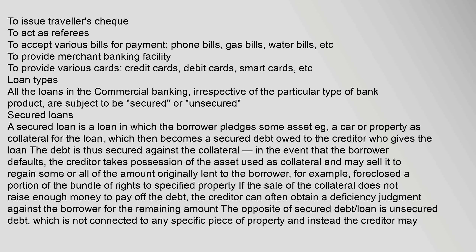All loans in commercial banking, irrespective of the particular type of bank product, are subject to being secured or unsecured. A secured loan is a loan in which the borrower pledges some asset, such as a car or property, as collateral for the loan, which then becomes a secured debt owed to the creditor. In the event that the borrower defaults, the creditor takes possession of the asset used as collateral and may sell it to regain some or all of the amount originally lent. If the sale of the collateral does not raise enough money to pay off the debt, the creditor can often obtain a deficiency judgment against the borrower for the remaining amount.